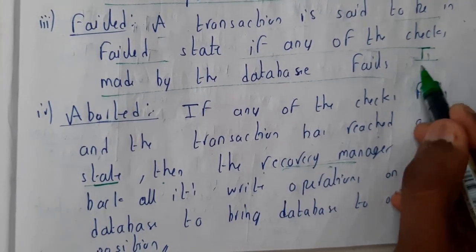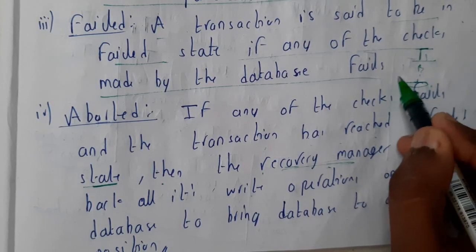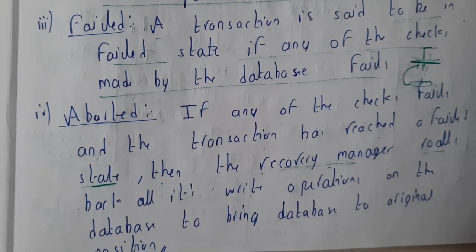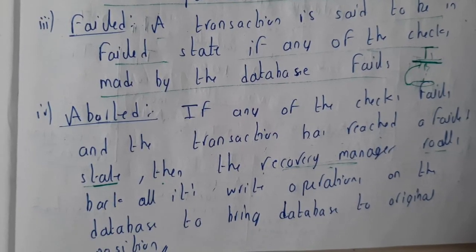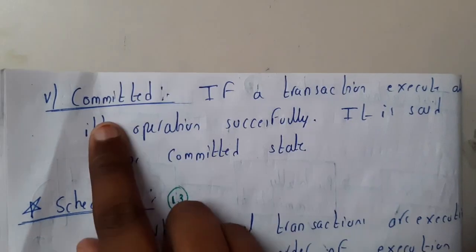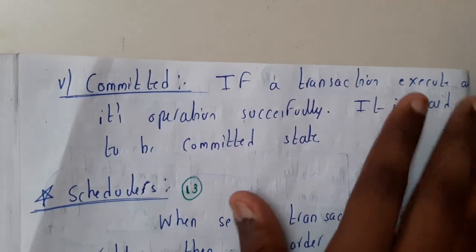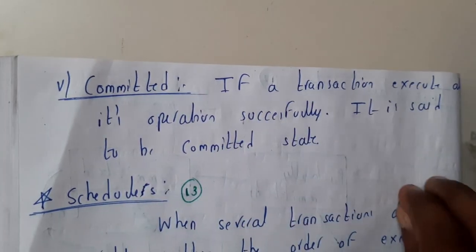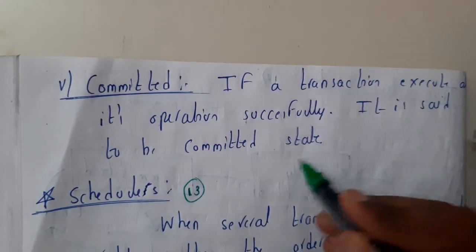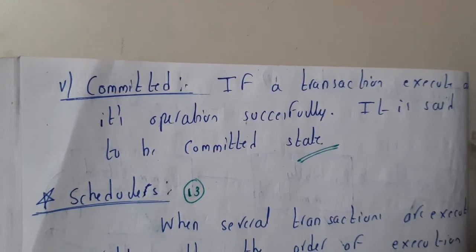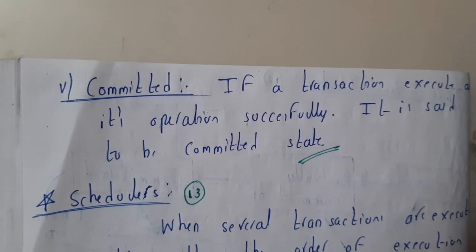We'll use a recovery manager tool to roll back everything that was done. For example, if we started a transaction with read, write, and an error occurred, we roll back to the first position and restart — that is abort. Aborted means the transaction has ended its service permanently. Committed: if a transaction executes all its operations successfully and its data is stored in the database, the transaction is committed.